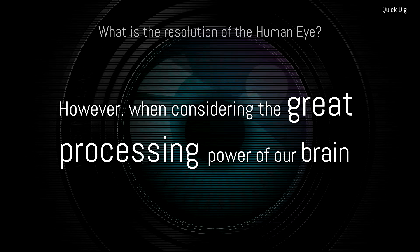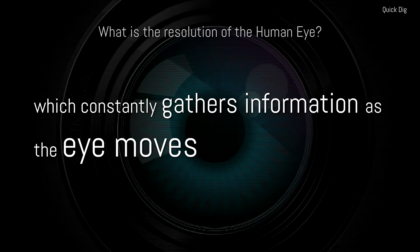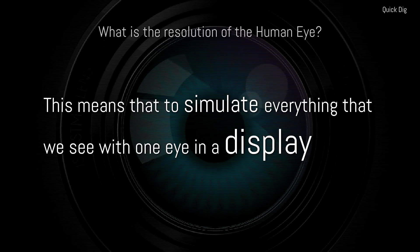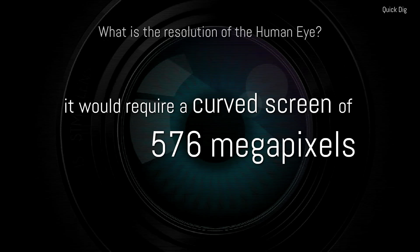However, when considering the great processing power of our brain, which constantly gathers information as the eye moves, this resolution would be closer to 576 megapixels. This means that to simulate everything that we see with one eye in a display, it would require a curved screen of 576 megapixels.